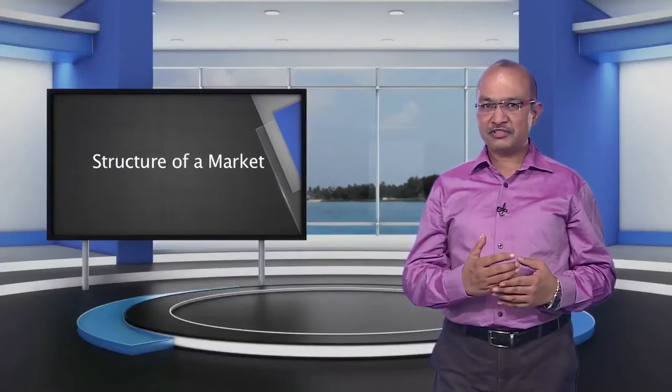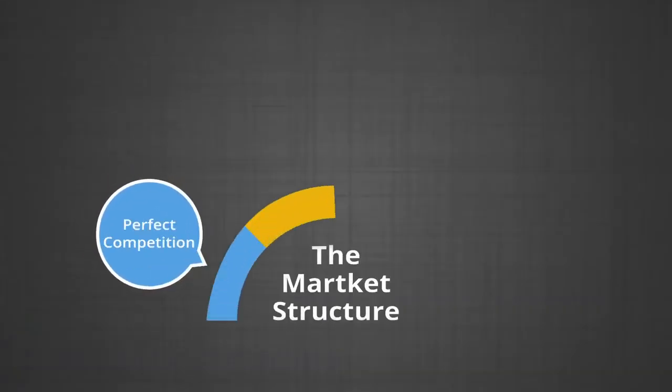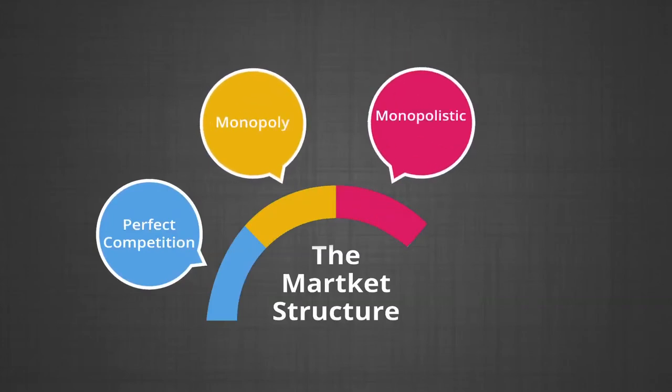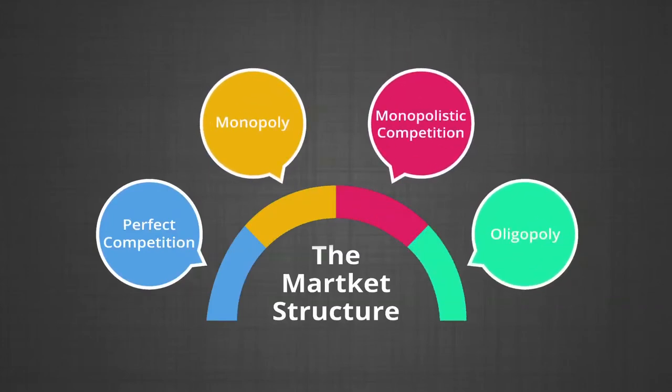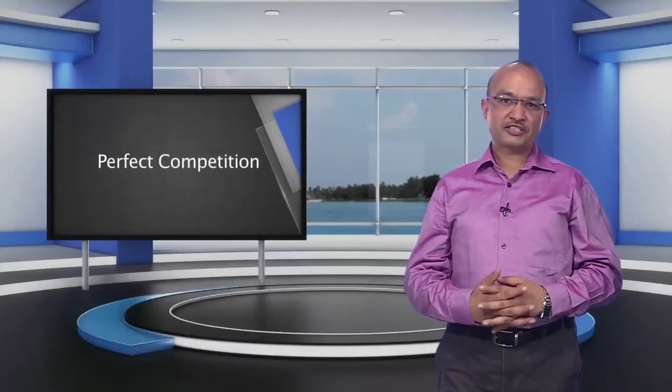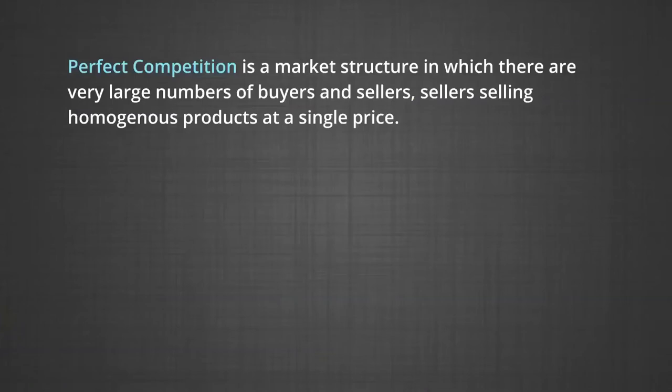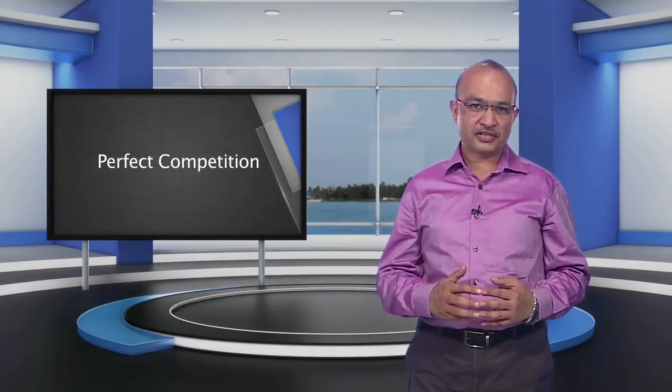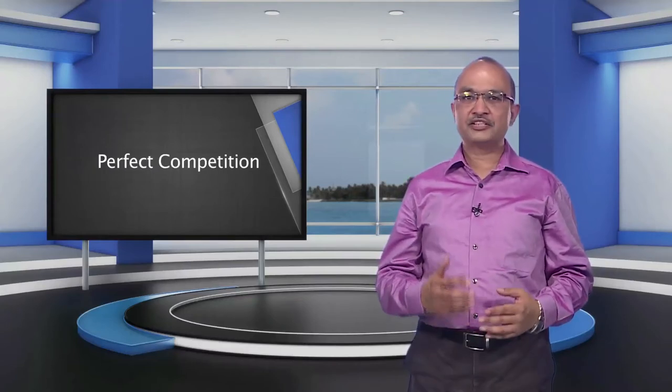Now, on the basis of these features, the market structure is broadly classified as follows: perfect competition and monopoly, which are two extremes of markets. Then we have monopolistic competition and oligopoly. Let us discuss perfect competition first. Perfect competition is a market structure in which there are a very large number of buyers and sellers selling homogenous products at a single price. It is characterized by a complete absence of rivalry among individual firms, where all firms in an industry are price takers and there is freedom of entry into and exit from the industry.